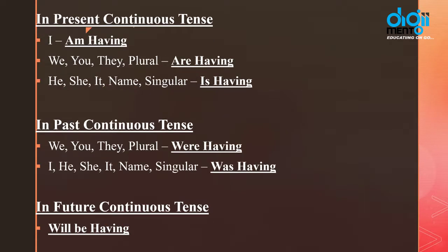In case of present continuous tense, in case of I the helping verb is 'am', and in continuous tense our verb is in -ing form. So: I am having. In case of plural — we, you, they and plural — the helping verb is 'are' and we use the -ing form: having. In case of third person singular — he, she, it, or any singular thing — the helping verb is 'is' and the verb is -ing, that is 'having'.